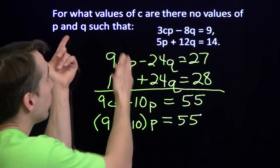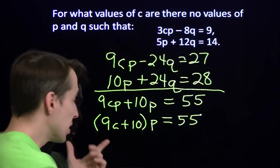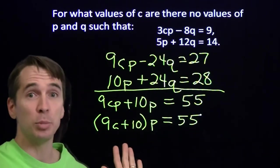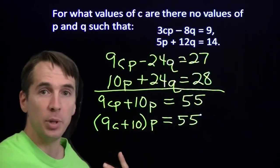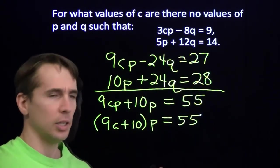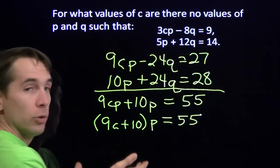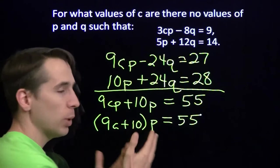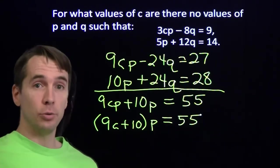Now, the question is, when are there no solutions? When is there no value of p that's going to satisfy this? Now, if this comes out to be anything besides 0, we can solve for p. Now, if this comes out to be 1, then we've got p equals 55. We can substitute back up here, get q. But if this comes out to be 0, then there's no solution for p. Because if this comes out to be 0, we have 0 equals 55. 0 is not 55, so there are no solutions.